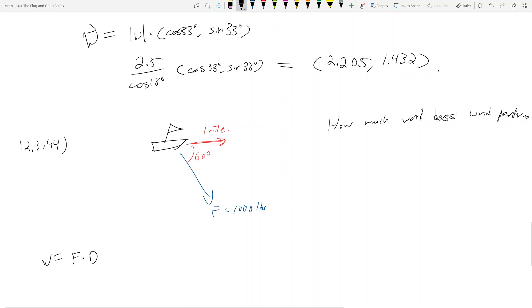Work equals force dot distance, but we don't have force as a vector and we don't have distance as a vector. Given that we have an angle, this should tell us what we should do. We should write: work equals the magnitude of force times the magnitude of distance times cosine theta. Anytime you see an angle, that's what you should automatically think when dealing with the dot product.